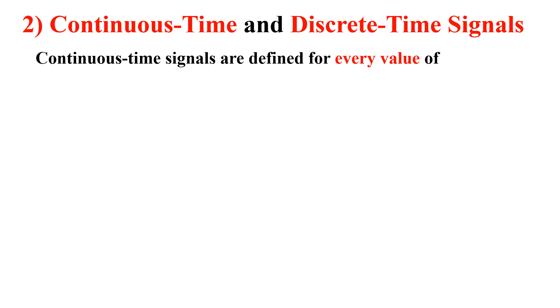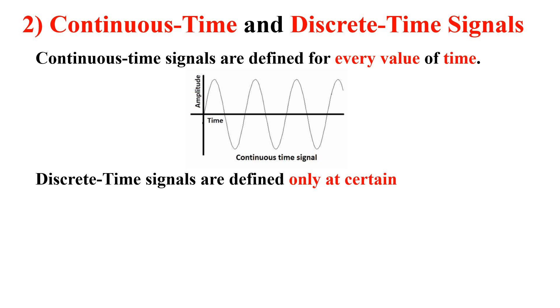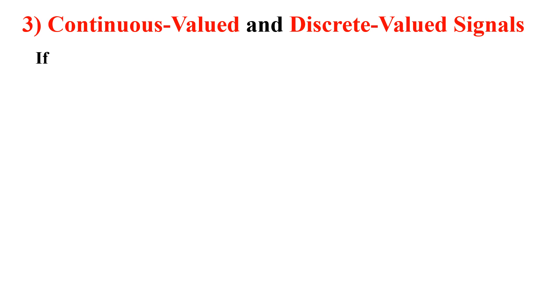Continuous time signals are defined for every value of time — for each and every value of time, we know its amplitude. Discrete time signals, on the other hand, are defined only at certain specific values of time. For example, defined at 0, 1, 2, 3 and -1, -2, -3. At position 1.5 it is undefined — such signals are discrete time signals.